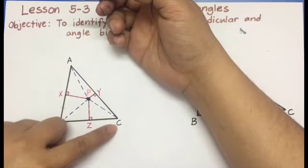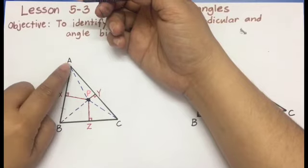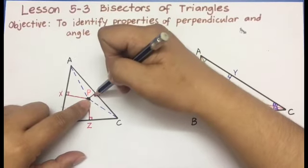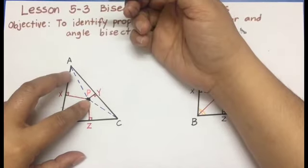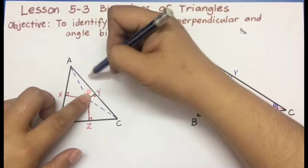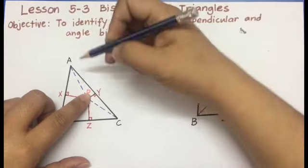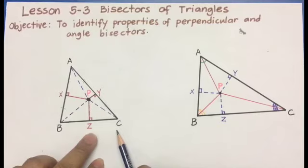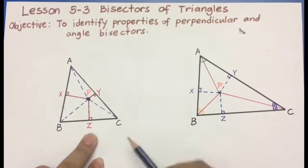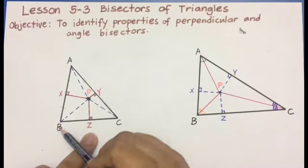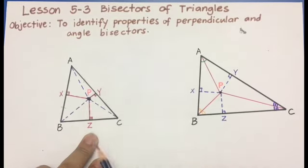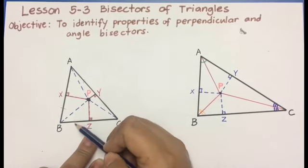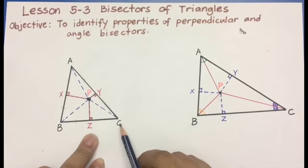The same is true with the second side of this triangle, side AC. Line Y is a perpendicular bisector of AC. It forms a 90 degree angle with this side and creates two congruent segments, AY and CY. Also on side BC, Z is a perpendicular bisector of side BC, forming a 90 degree angle and dividing BC into two congruent segments. Therefore, segment BZ is congruent to segment ZC.